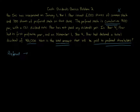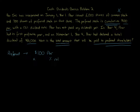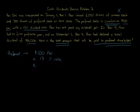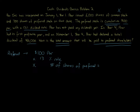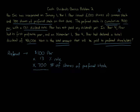You want to start by calculating the maximum amount that preferred shareholders can get in total. Take the par value — which is $100 par — and multiply that by the percentage dividend rate, which we're told is 13%. We also need to multiply by the number of shares of preferred stock. If you look at the problem, that's 700 shares of preferred stock, right there. So we can put 700. You always do this calculation for both cumulative and non-cumulative preferred.